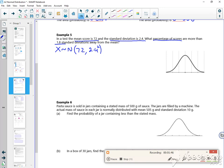What percentage of scores are more than 1.8 standard deviations away from the mean? So we're looking at mu plus or minus 1.8 lots of sigma. So mu minus 1.8 sigma is 72 minus 1.8 lots of 2.4, which is 67.68.